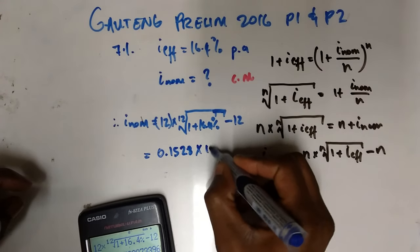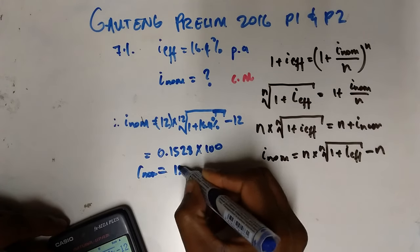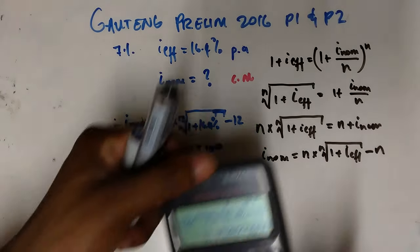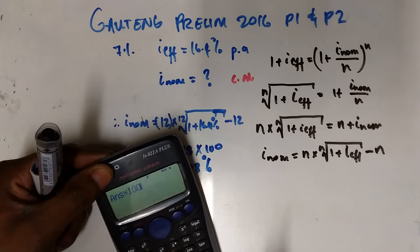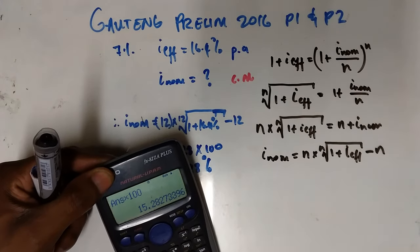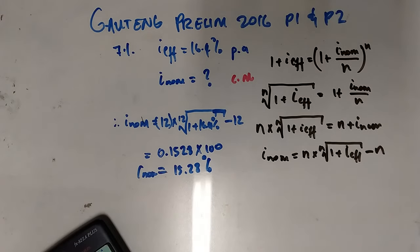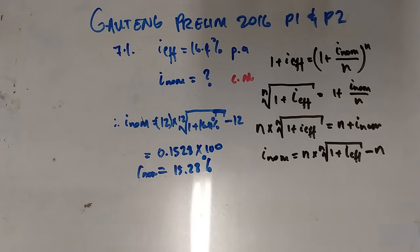Multiplying by 100, our i_nominal is 15.2827%, which we round to 15.28%. That completes subsection 7.1 — we found the nominal interest rate.